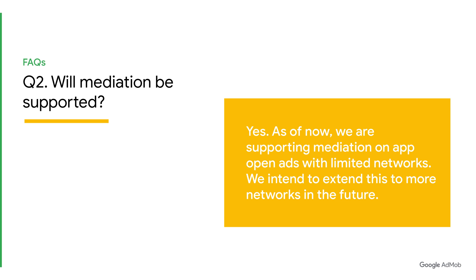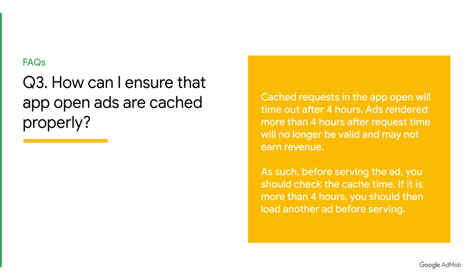Question 3: How can I ensure that AppOpenAds are cached properly? Cached requests in the AppOpen beta will time out after 4 hours. Ads rendered more than 4 hours after request time will no longer be valid and may not earn revenue. So, before serving the ad, you should check the cache time. If it is more than 4 hours, you should then load another ad before serving.